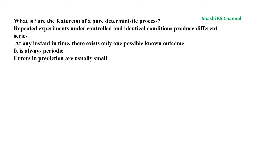Question 8: What are the features of a pure deterministic process? Options: repeated experiments under controlled and identical conditions produce different series; at any instant of time there exists only one possible known outcome; it is always periodic; or errors in prediction are usually small. The answer is: at any instant of time there exists only one possible known outcome. For a pure deterministic process, repeated experiments produce the same series, so the first option is not a feature.